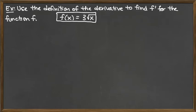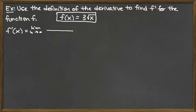For this problem, we need to use the limit definition of the derivative to find the derivative of the function 3 times the square root of x. There are a couple of different limit definitions of a derivative we can utilize. We have f prime of x — here we are not evaluating at any particular x value, just looking for the derivative function itself. So f prime of x equals the limit as h approaches zero of f of x plus h minus f of x, all over h. We are utilizing the variable x, not a particular x value.